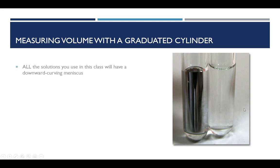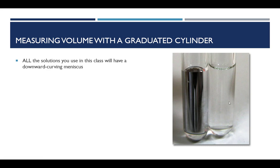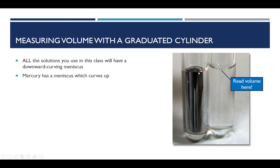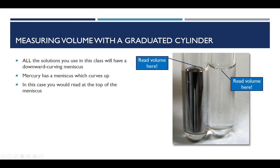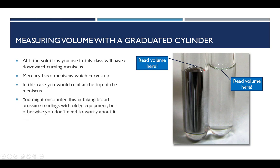Over to the right you see something interesting. What we have here is water — it has a downward curving meniscus. But over here we have a different liquid: liquid mercury. Mercury has a meniscus which curves up. So you would actually read at the top of a meniscus if it did curve up. The actual rule is you always look right in the middle — if it curves up, it curves up at the center and that's where you read; if it curves down, it curves down at the bottom. It's not likely you will see mercury, since we try to avoid it, but there are older blood pressure devices which do use it.